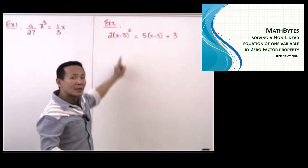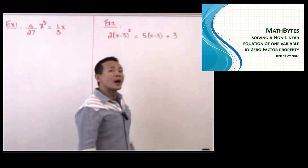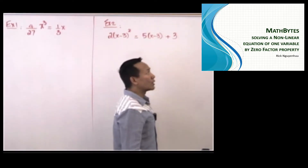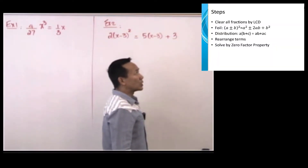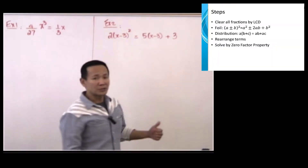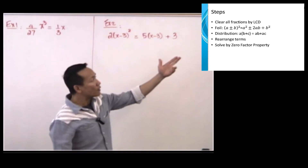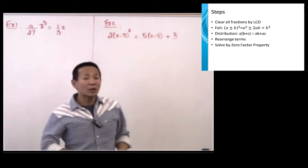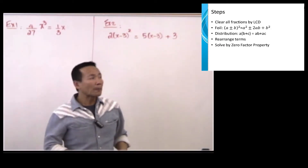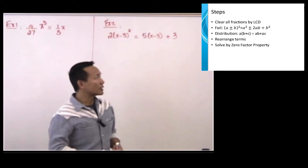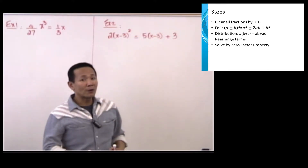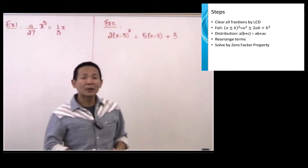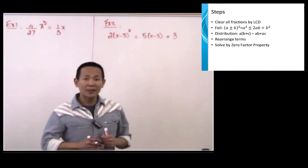Now let's go to the guideline on how to solve for a nonlinear equation of one unknown. First, we clear all fractions by the LCD, which is the least common denominator. Second, we will perform FOIL — if we have any FOILing inside the equation, we have to work on that.